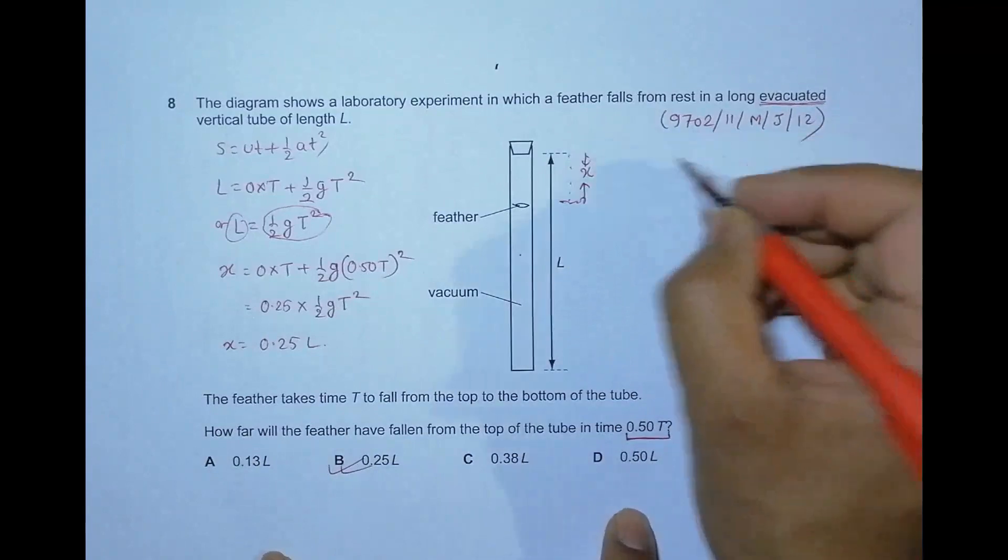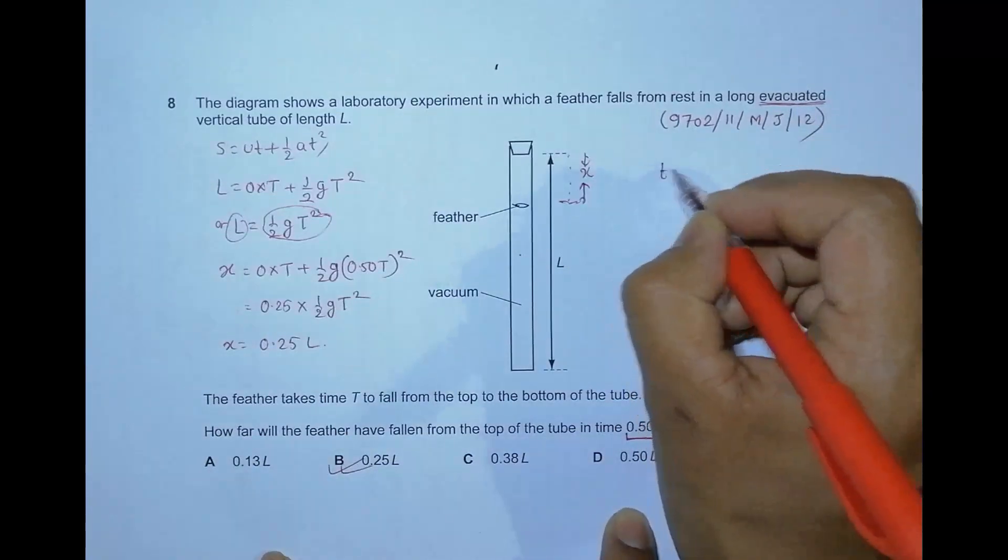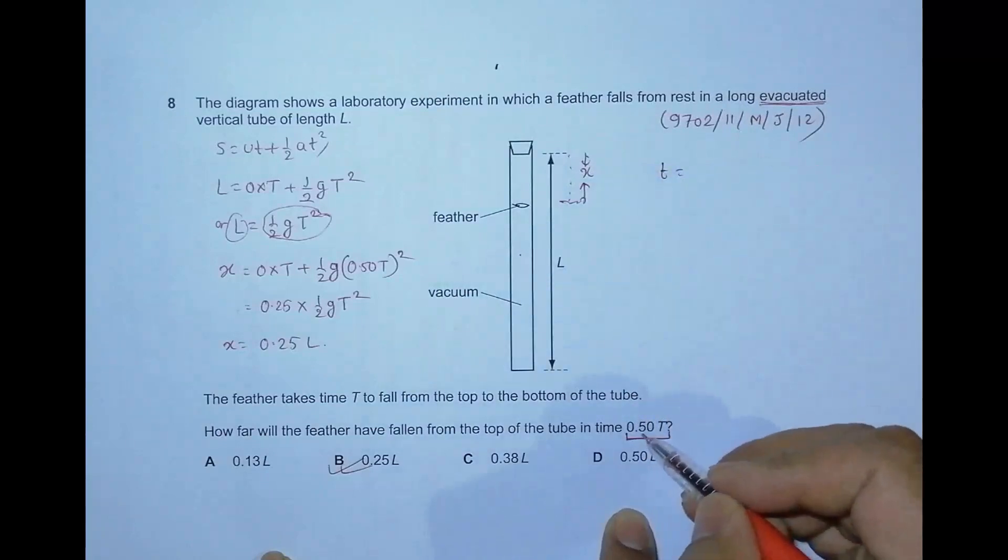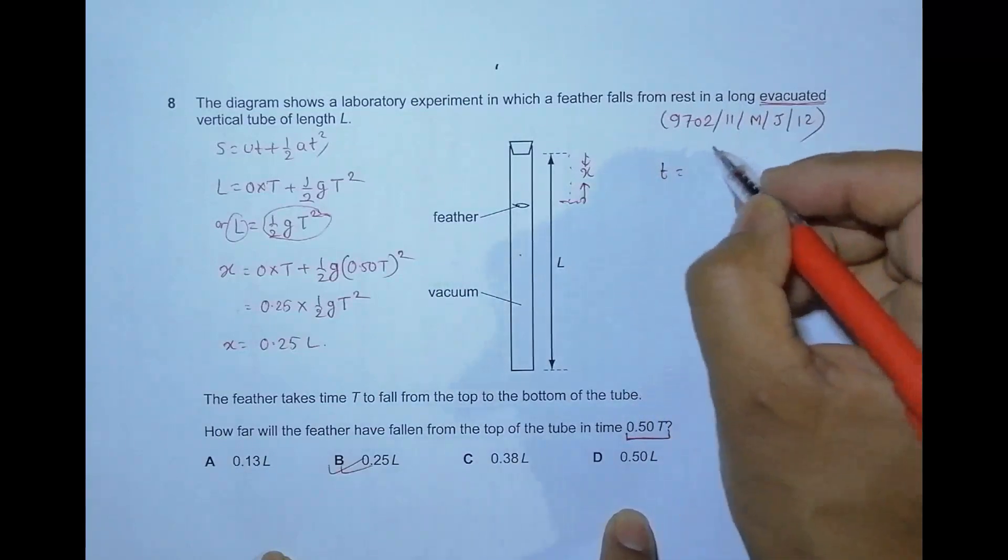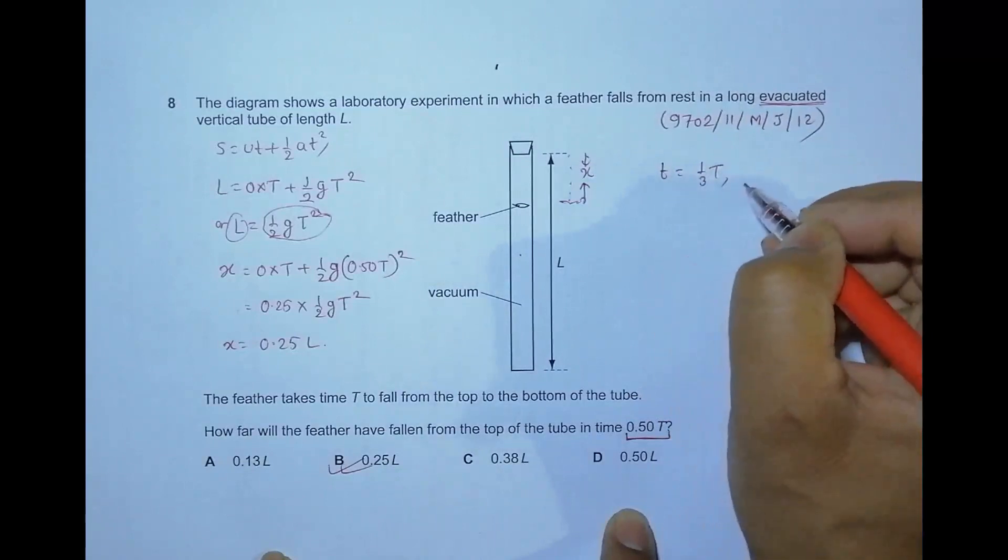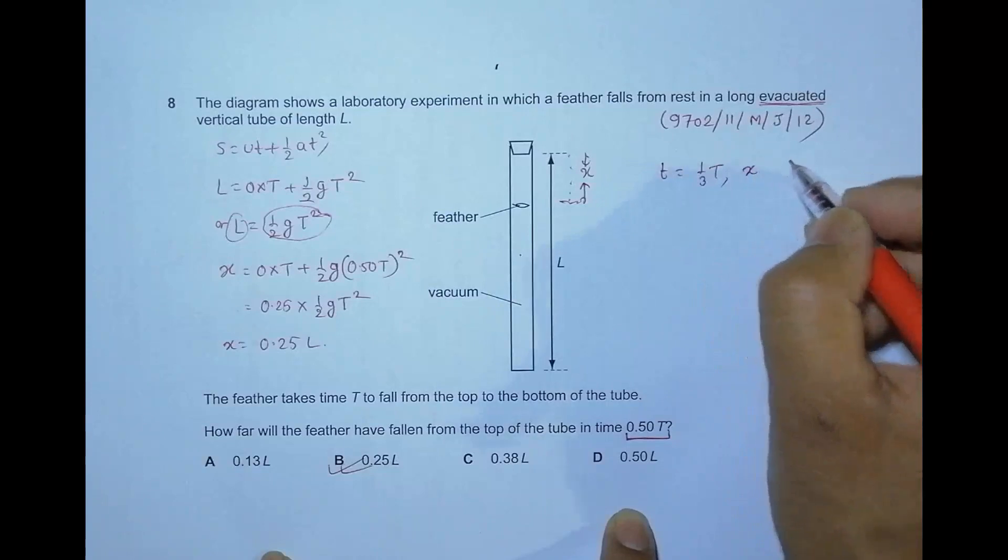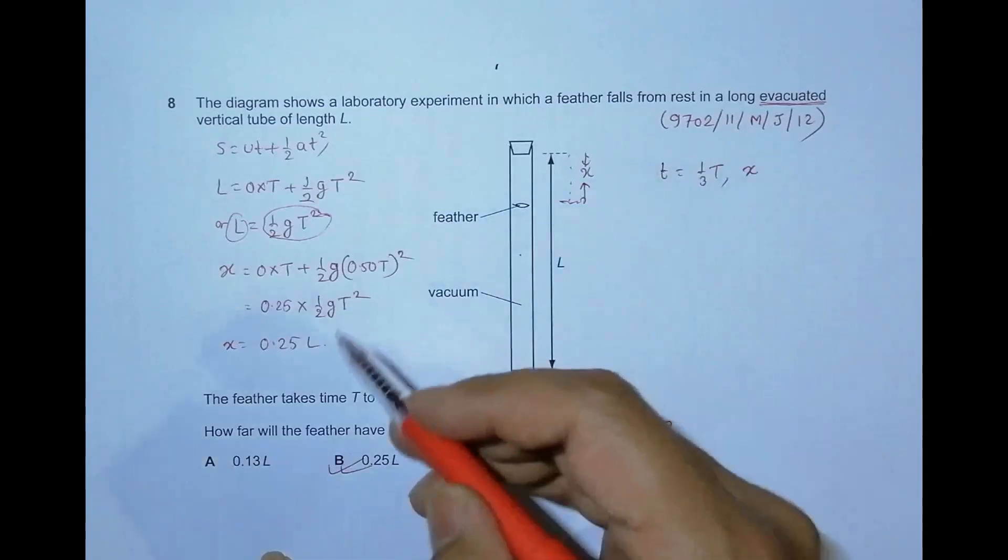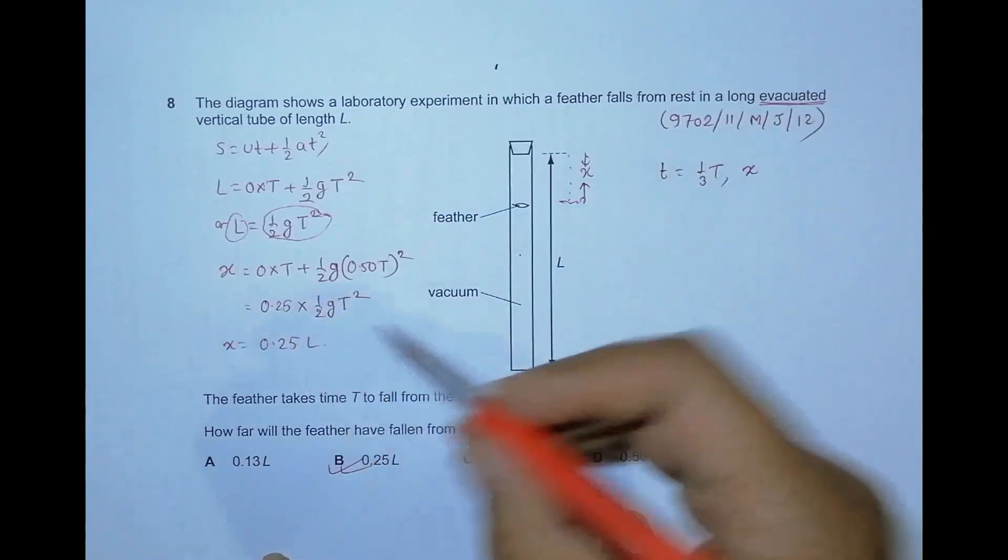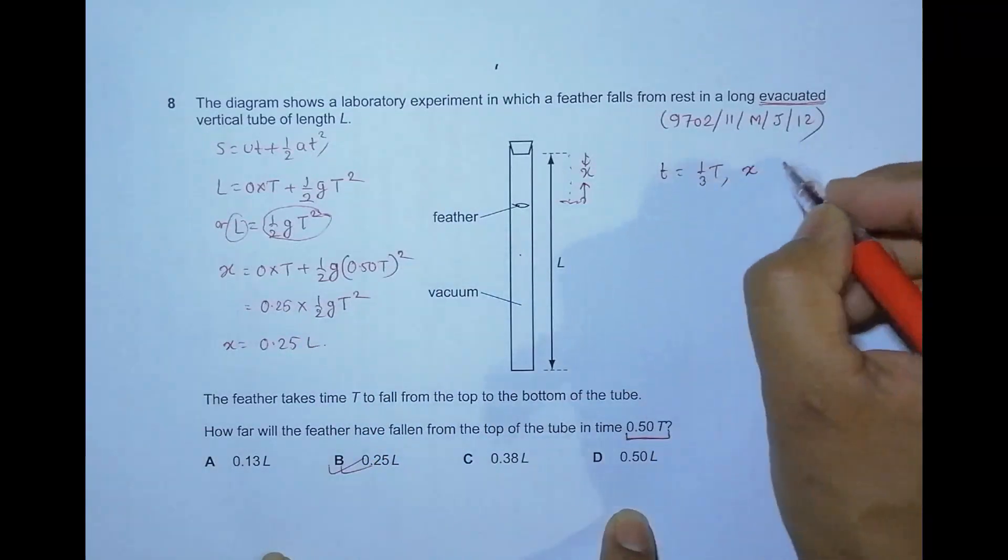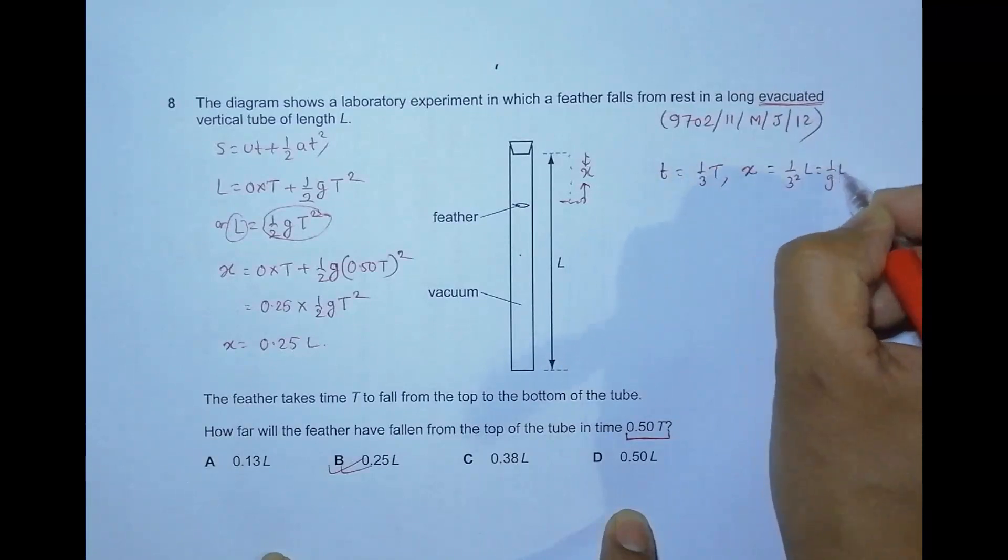For example, if we have the time equal to (1/3)t, then the x will be equal to the square of 0.5. Here since it is 1/3, it should be (1/3)², so it will be equal to (1/9)L.